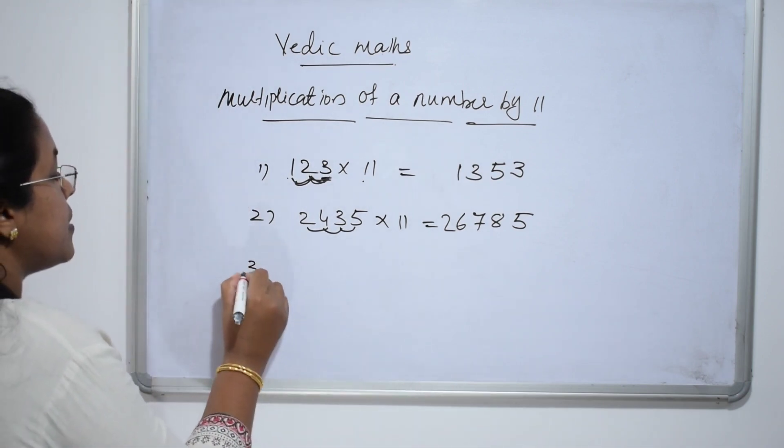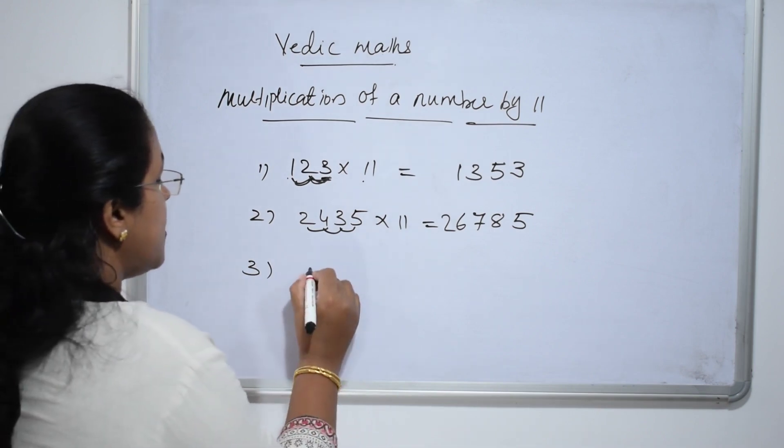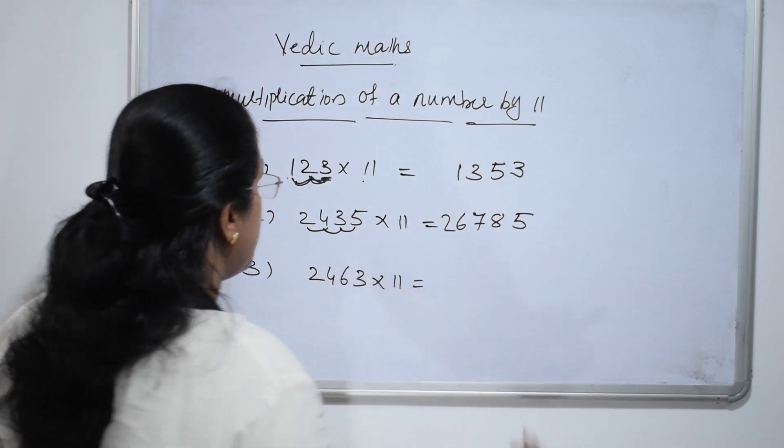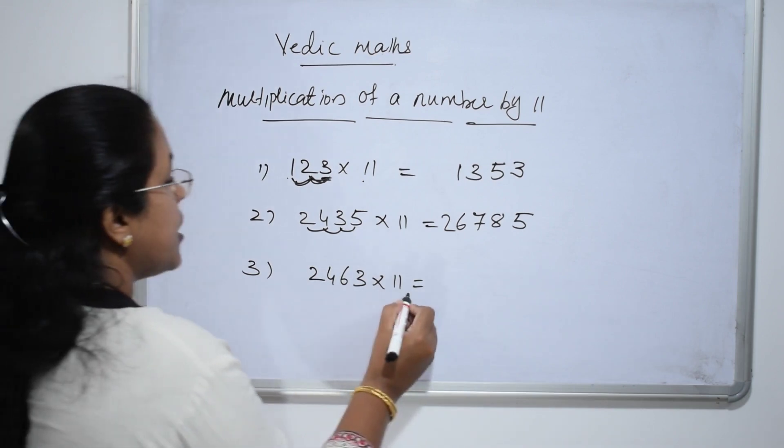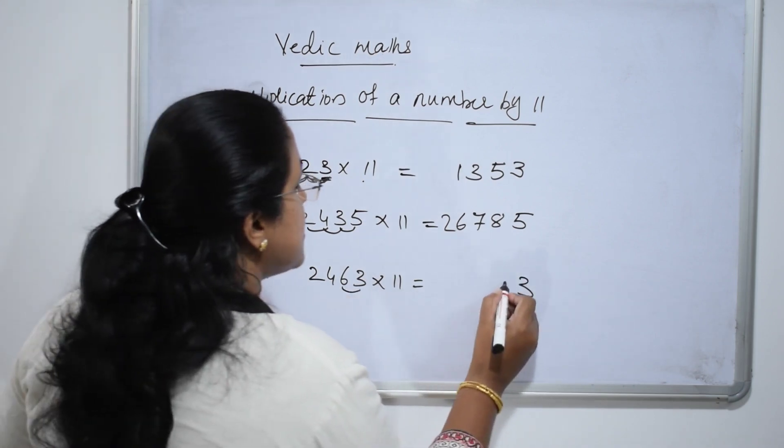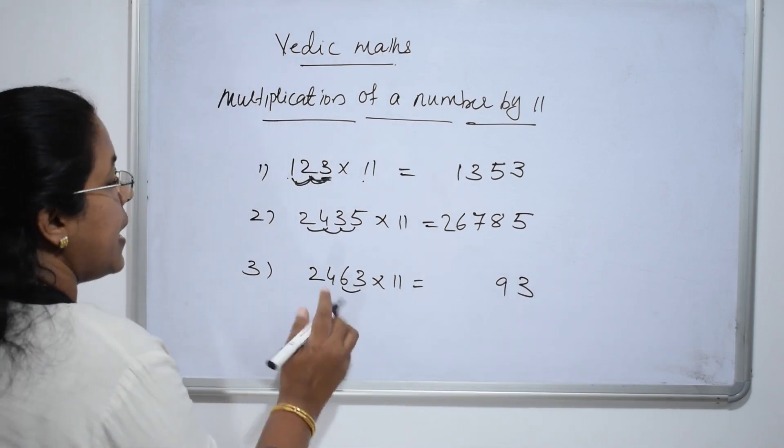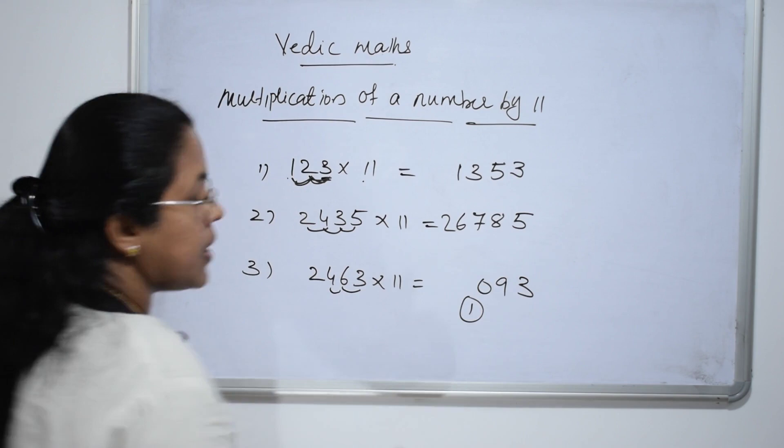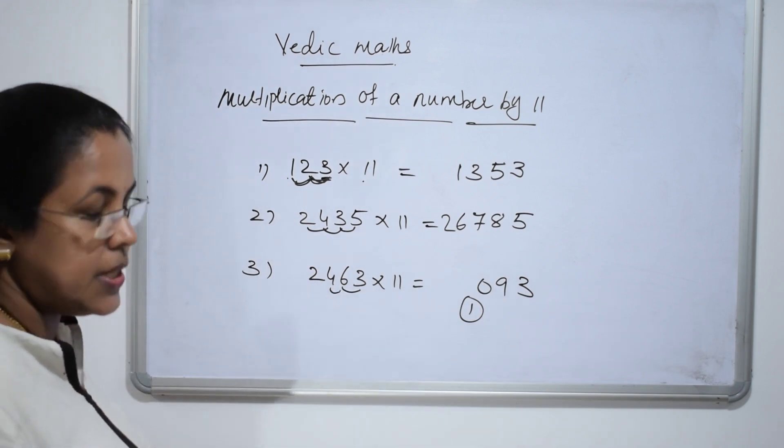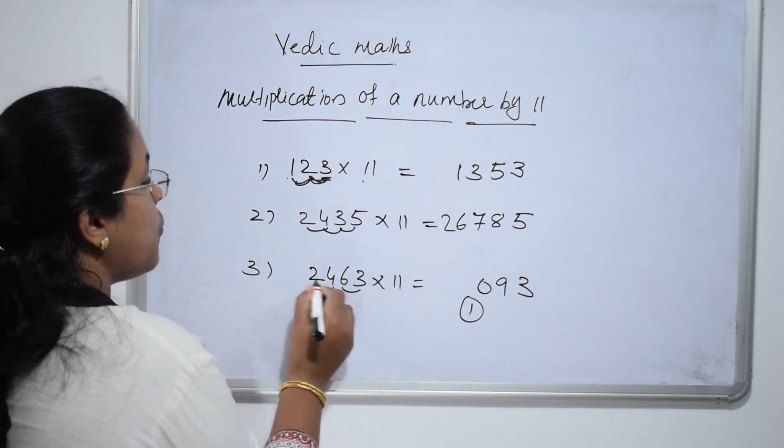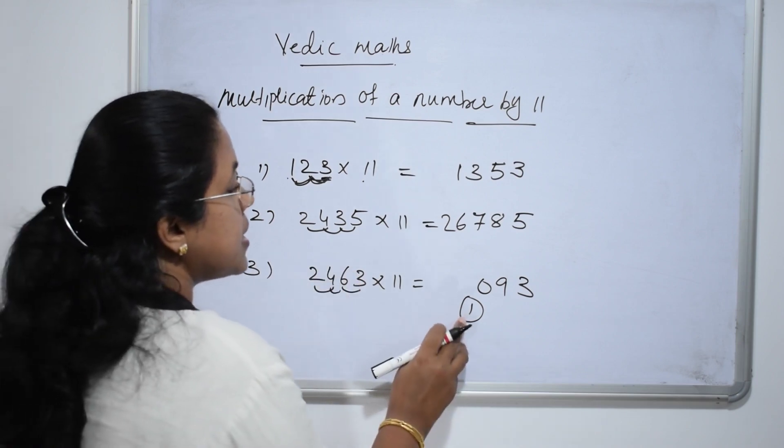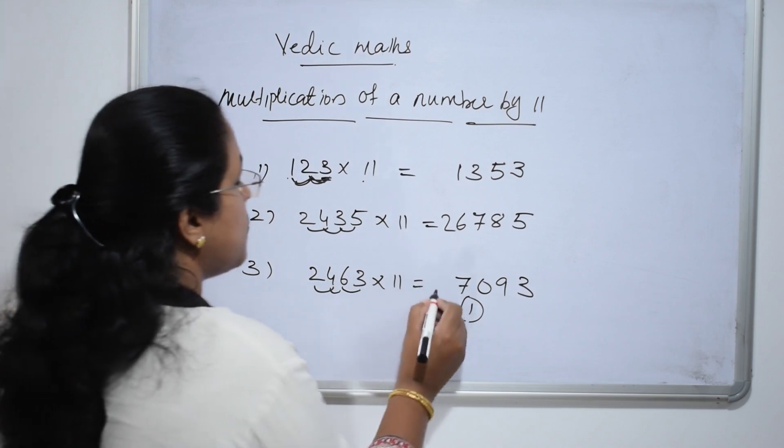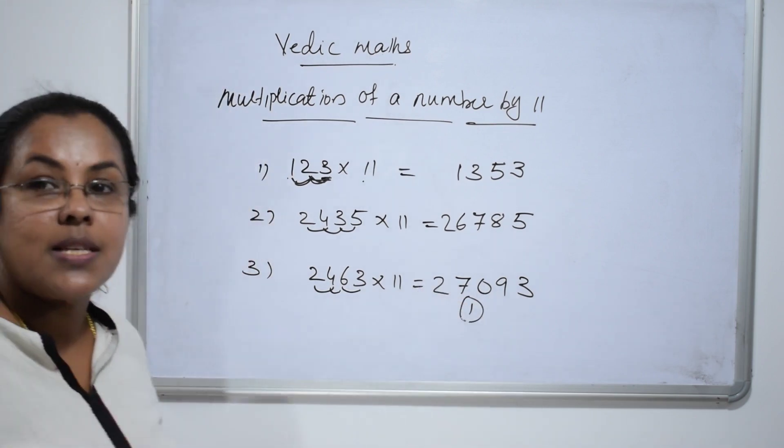If carry over comes. Write any number. 2463 into 11. 3 into 1, 3. 3 plus 6, 9. 6 plus 4, 10. Carry over 1 comes. 6 plus 4, 10. Carry over 1 comes. Next, 4 plus 2, 6. 6 plus this carry over 1, 7. 2 into 1, 2. Isn't it very quick?